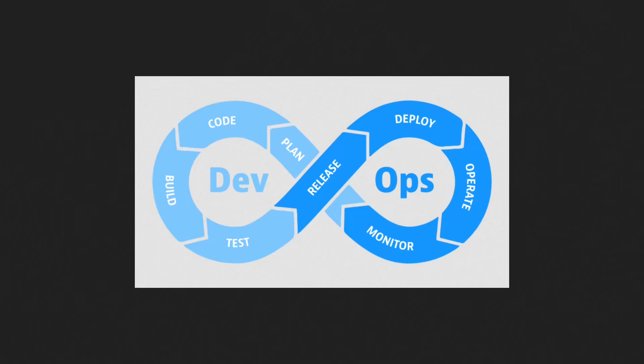The code review process means that changes are reviewed by other team members before being approved for release. If you directly push something to production and your code breaks something, you are at risk. It's always better to have code reviewed by someone else in the team, and the same should go for other team members — everyone should be in sync, and it should be an easy process.